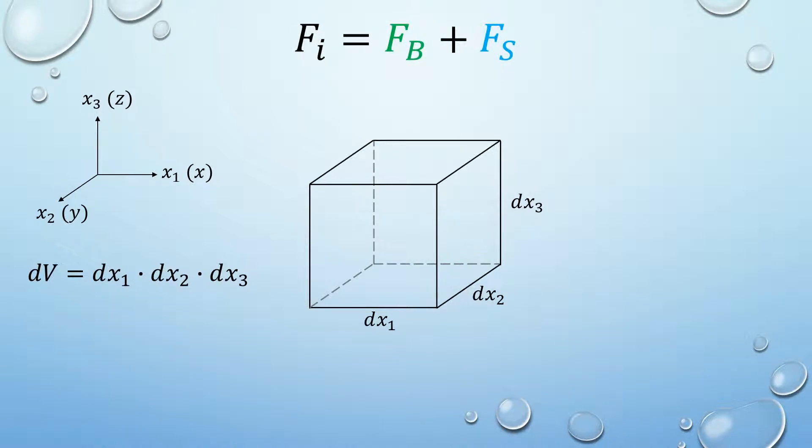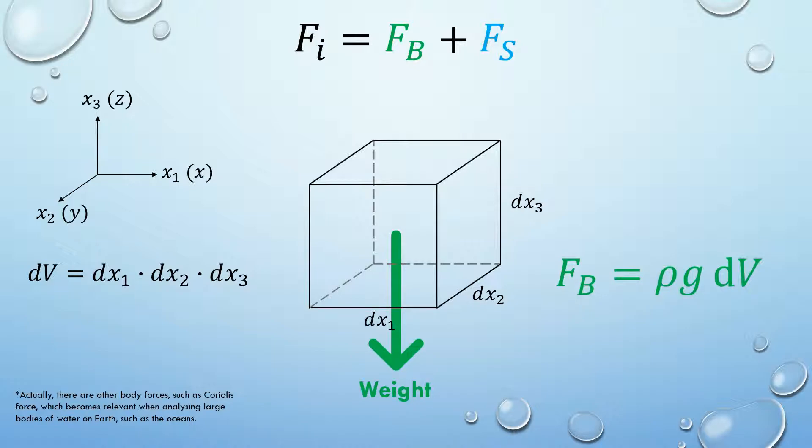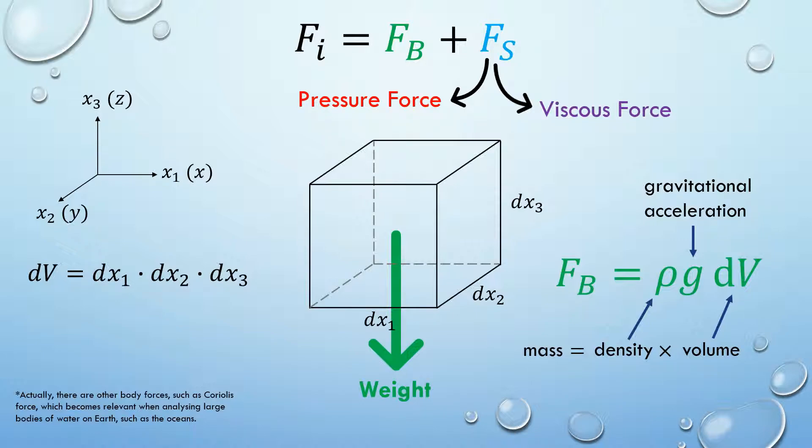The total force acting on this cube consists of body force and surface forces. The body force is commonly known as weight, and it is the density of the fluid times volume times gravitational acceleration. Remember that the mass of the cube is equal to the density, ρ, times the volume. The surface forces consist of pressure force and viscous force acting on the surface of the cube.